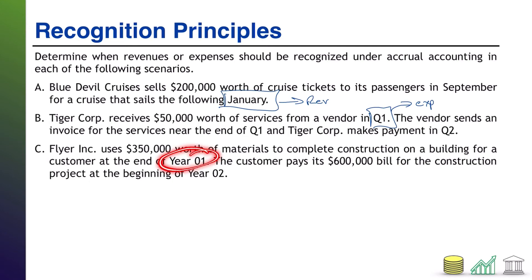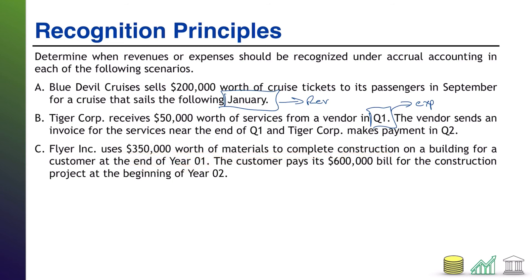We have two options: year one or year two for each of them. Let's talk about expenses first. The materials were used up during year one. When you use up your resources, use up your assets, that's when the cost was incurred. Notice the problem says nothing about when you bought or paid for these materials — because it's irrelevant. You used them in year one. Therefore, for expense recognition, year one is when the cost was incurred.